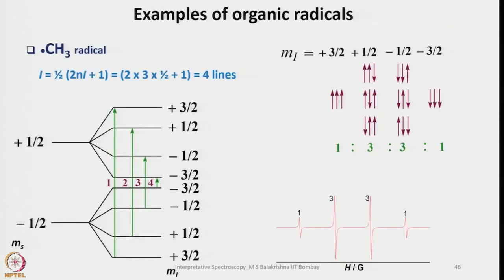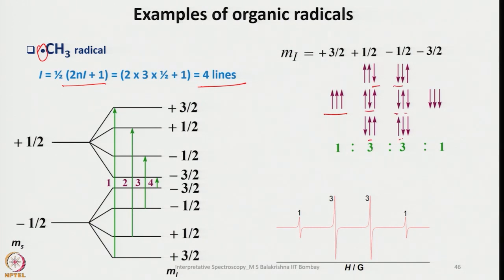Now let us look at some examples. To begin with, consider the methyl radical. This electron would interact with 3 protons of i equals half. Applying the 2Ni+1 rule, we expect 4 lines. The 3 protons can be all aligned with the applied magnetic field, or one can be opposing with 3 combinations, or two opposing, or all three opposing — all degenerate — giving intensities 1:3:3:1.